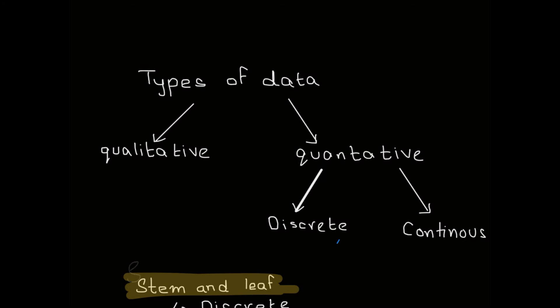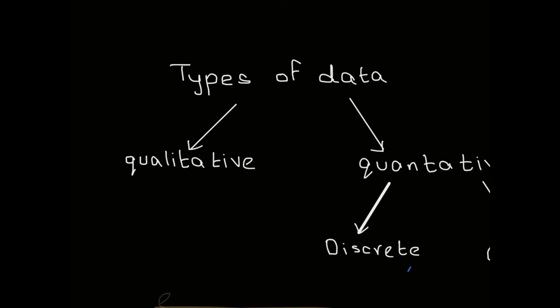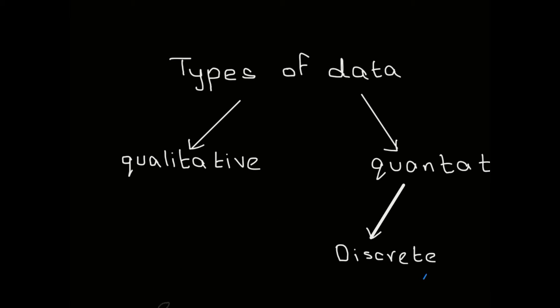Hello guys, so in this video I will go through the types of data and a way to represent them. There are two types of data: qualitative and quantitative. Qualitative data is any data that cannot be measured.